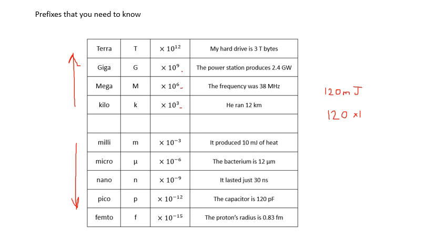On your calculator you have a button which is times 10 to the. Find it if you don't know where it is. Find it. Times 10 to the, and then plus minus, you press minus, and then it's three because it's millijoules. That's 120 millijoules.